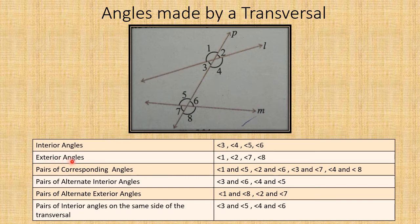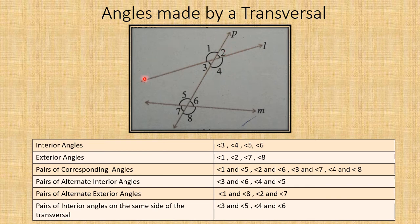The second type is exterior angles. Exterior means outside — the part outside the two lines. Angle one and angle two are on the outside at the top, and angle seven and angle eight are on the outside at the bottom. These are called exterior angles. So we have four interior angles and four exterior angles.